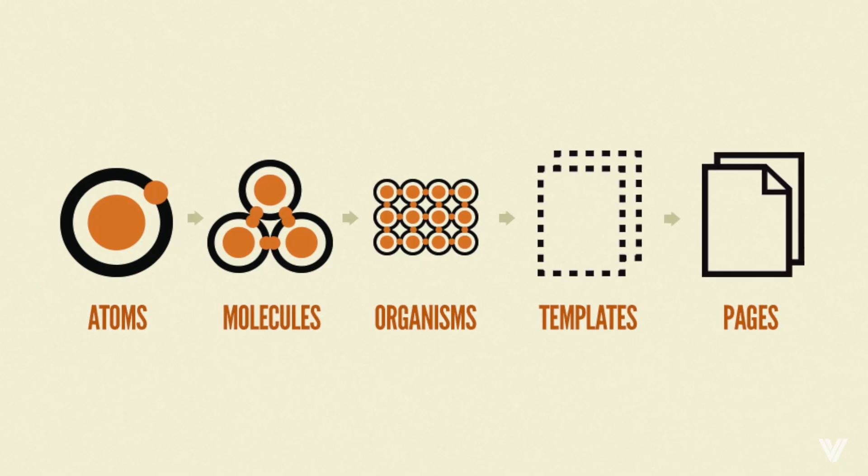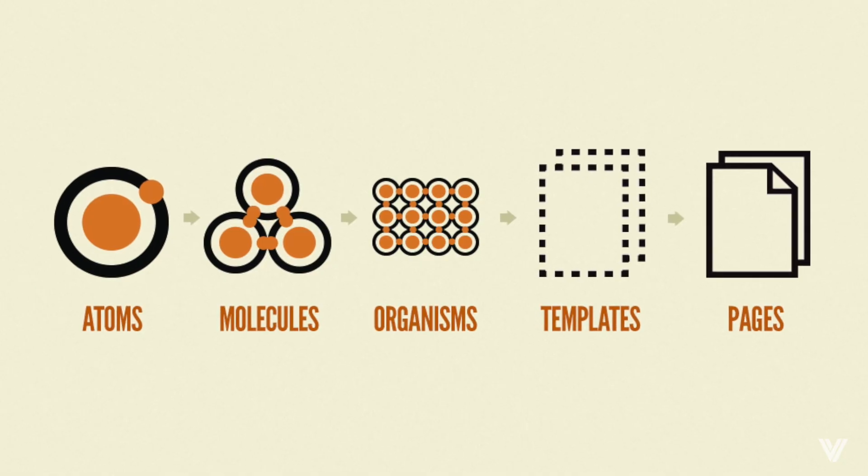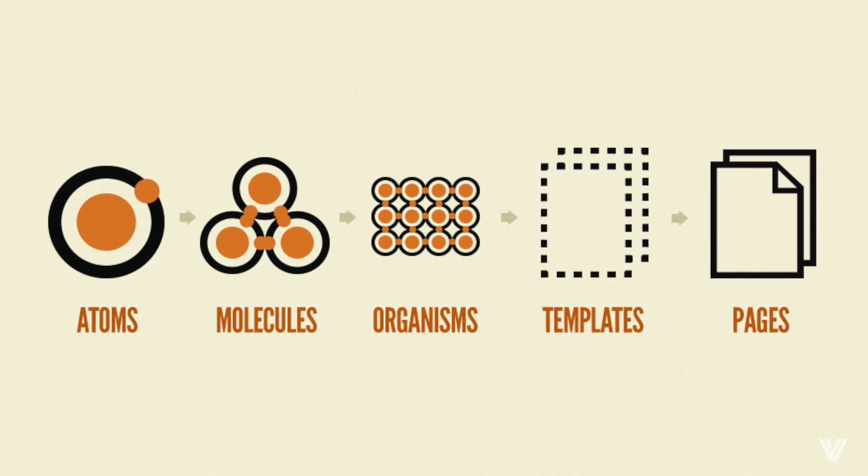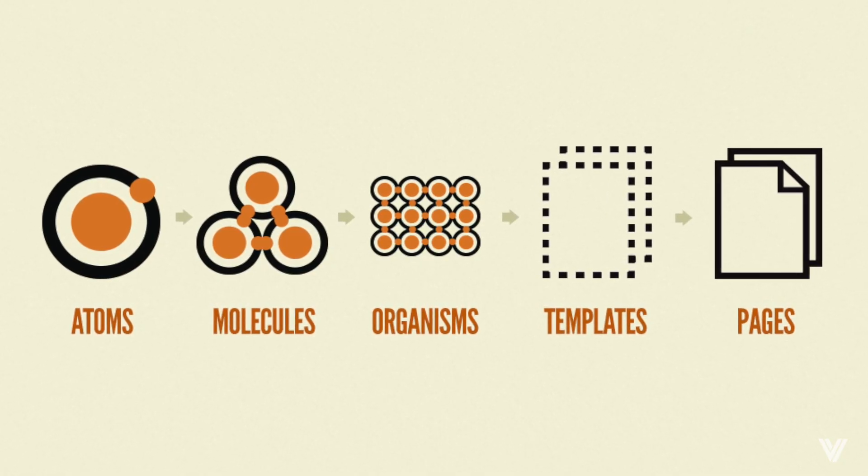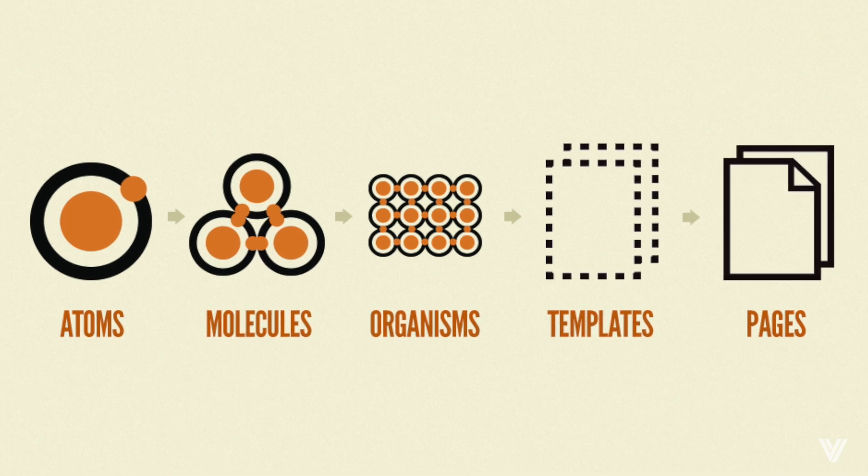In atomic design, Brad Frost came up with a really easy and logical methodology using the natural world structure. There are five different stages of atomic design that all exist at the same time. That includes atoms, molecules, organisms, templates, and pages.